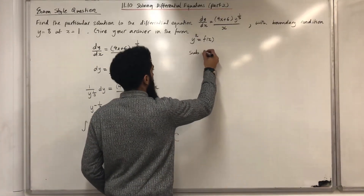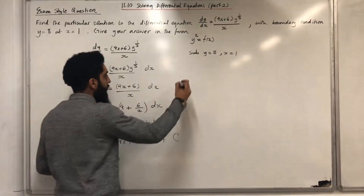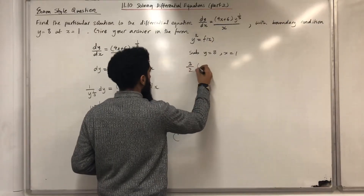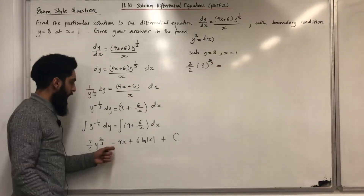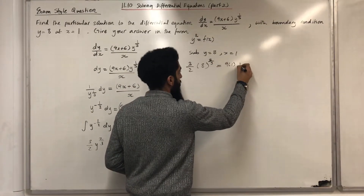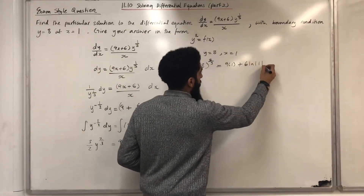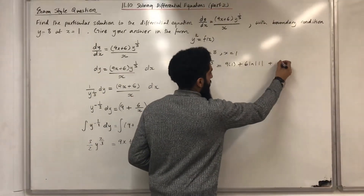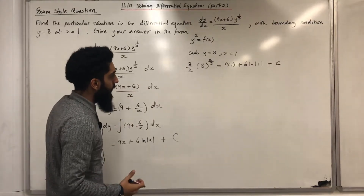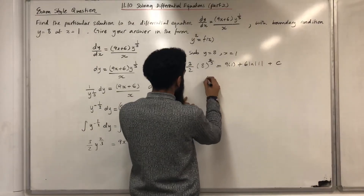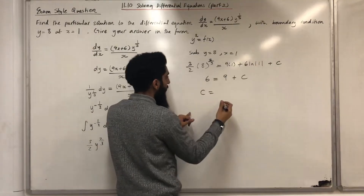Substituting y = 8 and x = 1 gives (3/2) · 8^{2/3} = 9·1 + 6 ln|1| + c. Now ln|1| = 0, so simplifying both sides we obtain 6 = 9 + c, therefore c = 6 − 9 = −3.